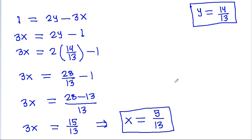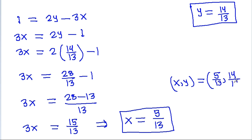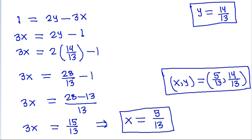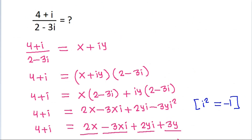So x = 5/13 and y = 14/13. Therefore (4 + iota) / (2 - 3 iota) = 5/13 + iota·(14/13).